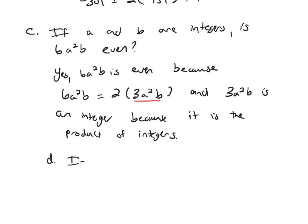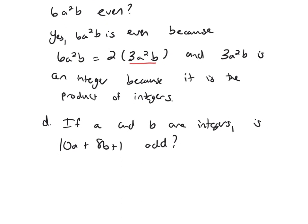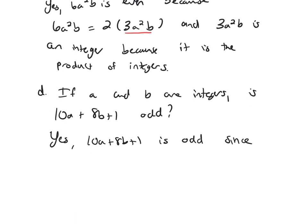Last question: if a and b are integers, is 10a plus 8b plus 1 odd? So, we're going to say yes, 10a plus 8b plus 1 is odd. Well, if I want to show that it's odd, I've already got the plus 1 at the end. It needs to be 2 times something plus 1, and what goes in this something, if you factor out a 2, is 5a plus 4b.